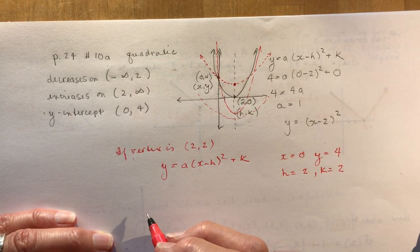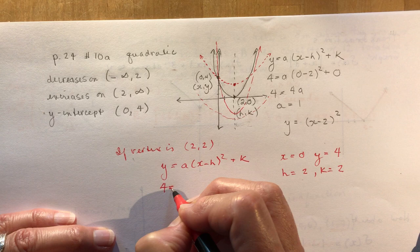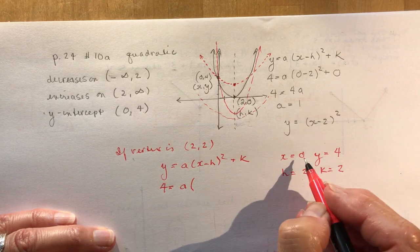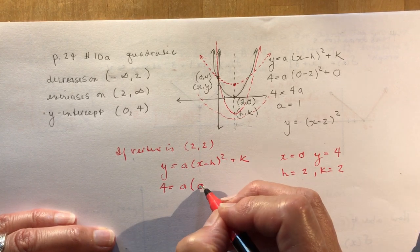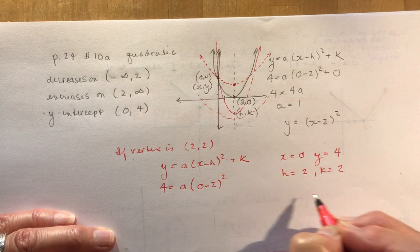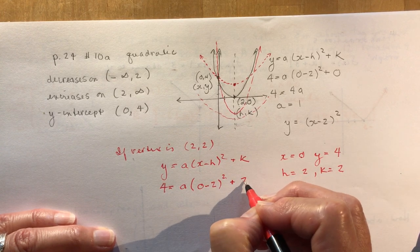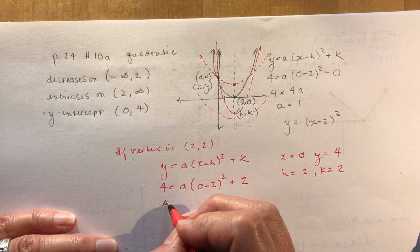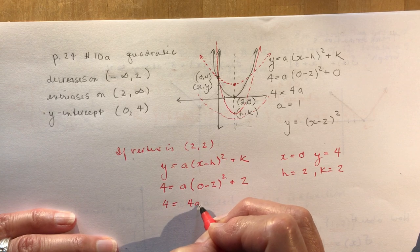So if you plug those in now, you'd have 4 is equal to a times x is 0, minus 2. So 0 minus 2 squared plus k, which is 2. So I would have 4 is equal to 4a plus 2.